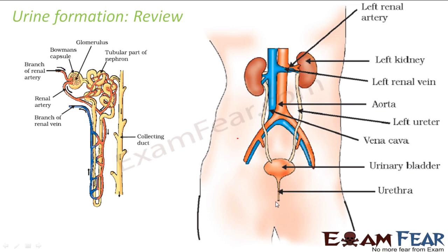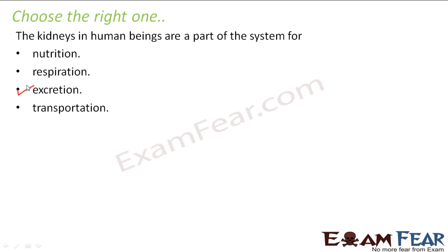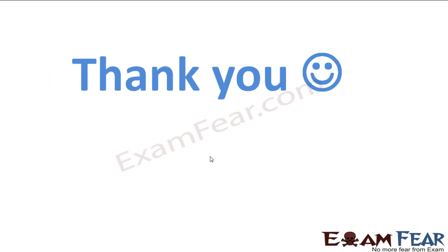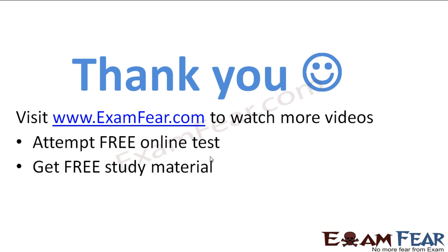A quick review question: the kidneys in human beings are part of which system — nutrition, respiration, excretion, or transportation? The answer is excretion. This lesson on life processes covered nutrition, respiration, transportation, and excretion. Please understand the concepts before memorizing. See you in the next lesson — visit examfear.com to watch more videos, attempt free online tests, get free study material, and find tutors and mentors.